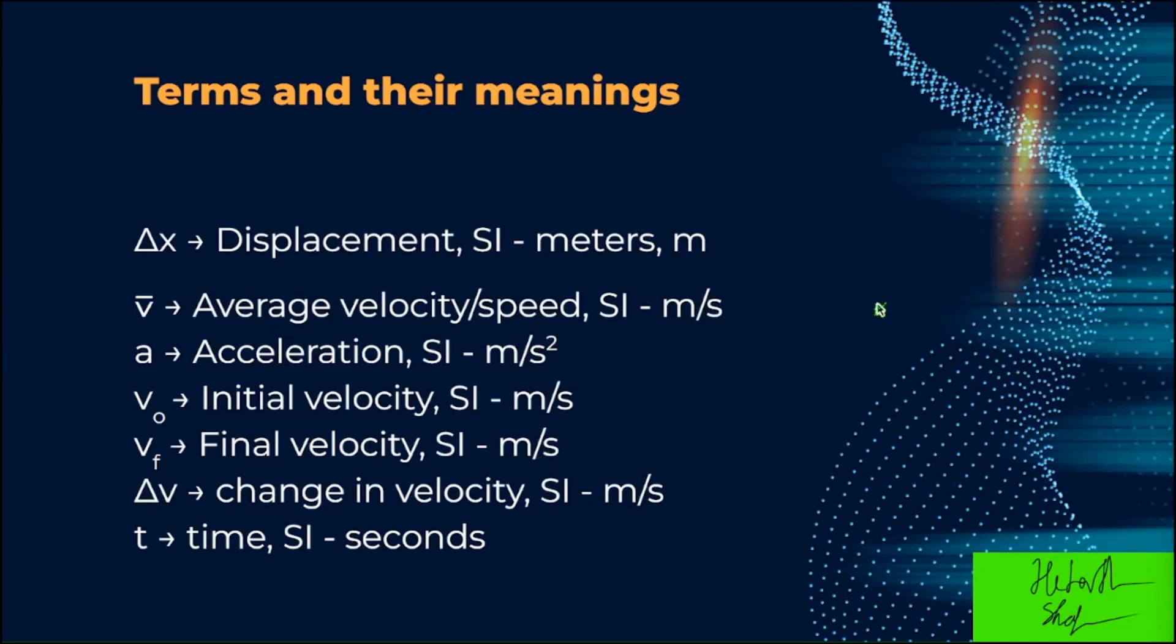Now we have terms and their meanings. First we have delta x, which again means displacement, and it is measured in meters, which is the SI unit. Then we have v bar, which is average velocity or speed, and it is measured in meters per second.